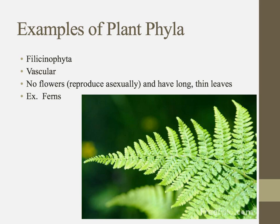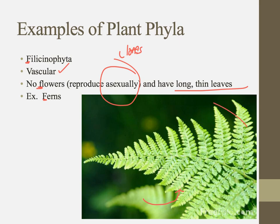Filicino/ferns — I remember this because F for filicino, F for ferns. These guys are vascular; they have those xylem and phloem tissues, so they can grow a little bigger. But they don't have flowers because they are asexual reproducers. On the underside of fern leaves grow little spores, which are exact clones of the parent plant. They have long, thin leaves — you know what ferns look like.